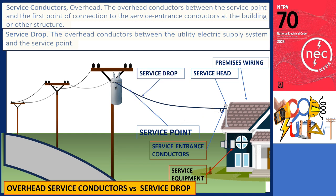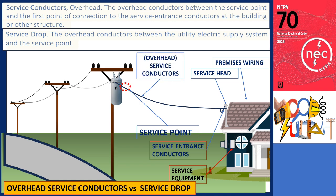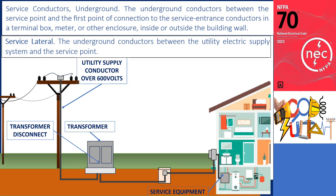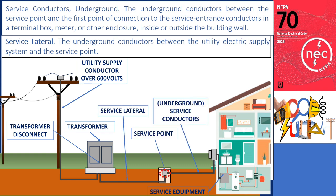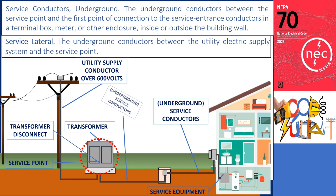However, if the service point is at the transformer disconnect or the transformer itself, these conductors are called service conductors, overhead. Now, let's discuss service laterals and underground service conductors. In the illustration depicting an underground installation, if the service point is at the handhole, the conductors are known as service laterals. Any conductors beyond the service point in this scenario are called service conductors, underground. If the service point is at the transformer or the disconnect of the transformer, the conductors are specifically referred to as underground service conductors.